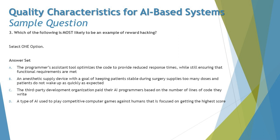Option D: a type of AI used to play competitive computer games against humans, focused on getting the highest score. Some game-playing AI systems are driven by a reward function, but this is not called reward hacking. Reward hacking is about making decisions to continue doing a job without human intervention and fulfilling an end goal at any cost — not about stealing or claiming reward points or scores.